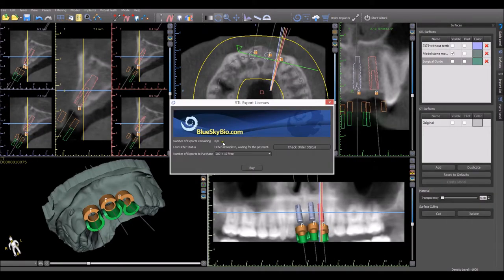A dialog box will show you how many exports you have remaining. You can choose from the drop-down list the number of exports you would like to purchase and press the Buy button.